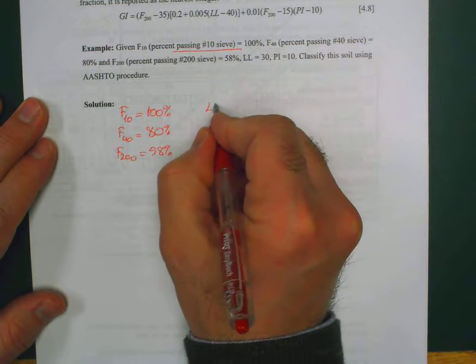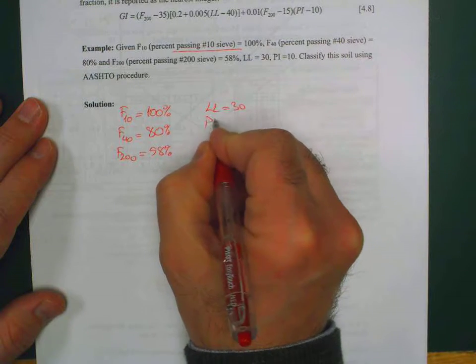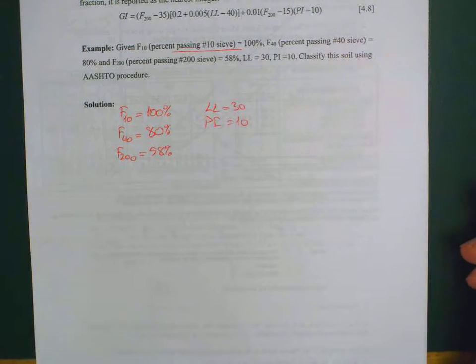Liquid limit is given as 30, and plasticity index is given as 10. We are classifying based on AASHTO procedure.